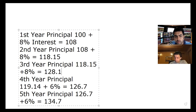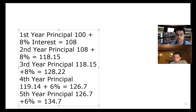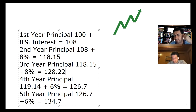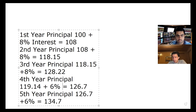Are you seeing the difference between earning 6% and earning 8%? Just that 2% extra has got you to the level of what the 5th or 4th year would have given you at 6%. But in the 3rd year itself at 8%, you've already reached the 4th year of 6%.